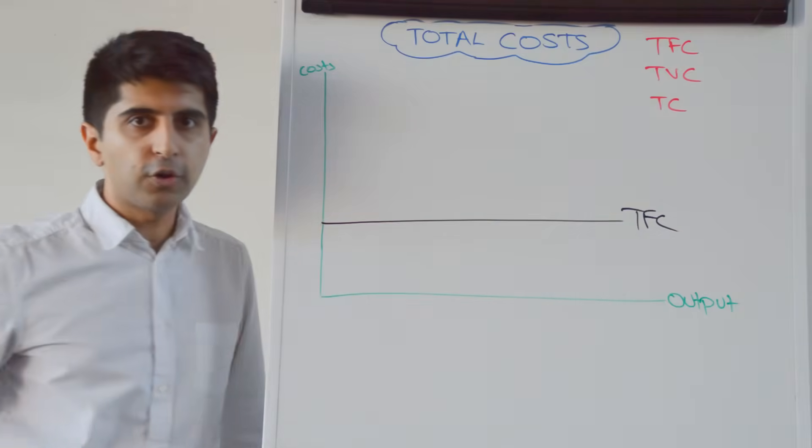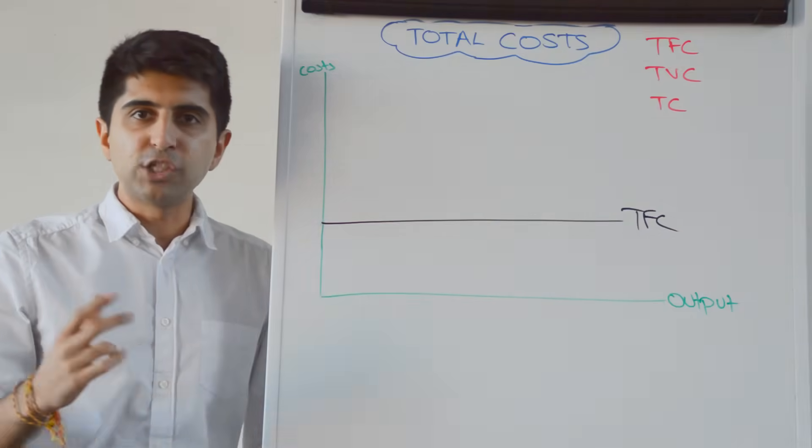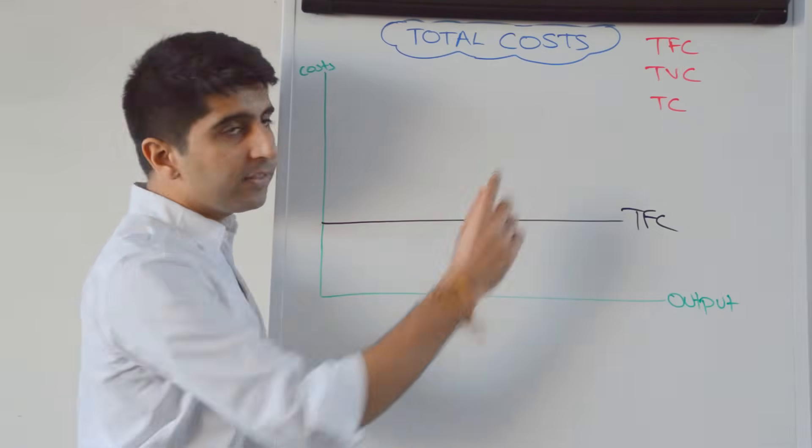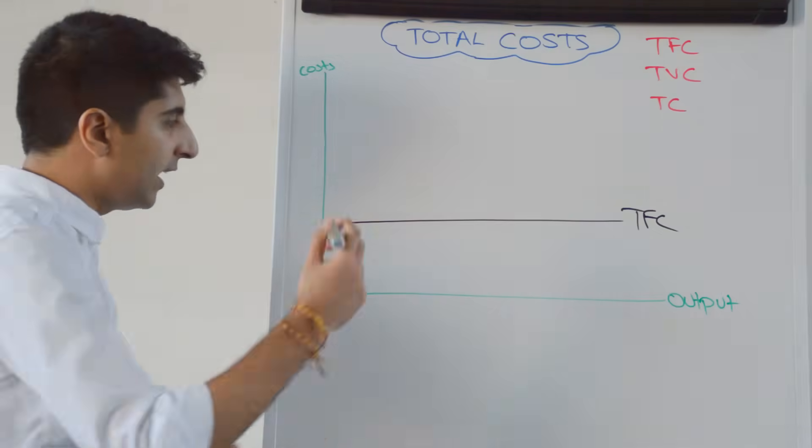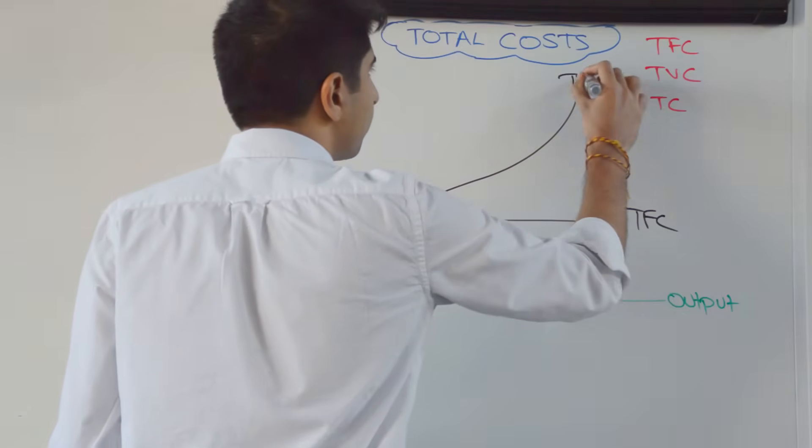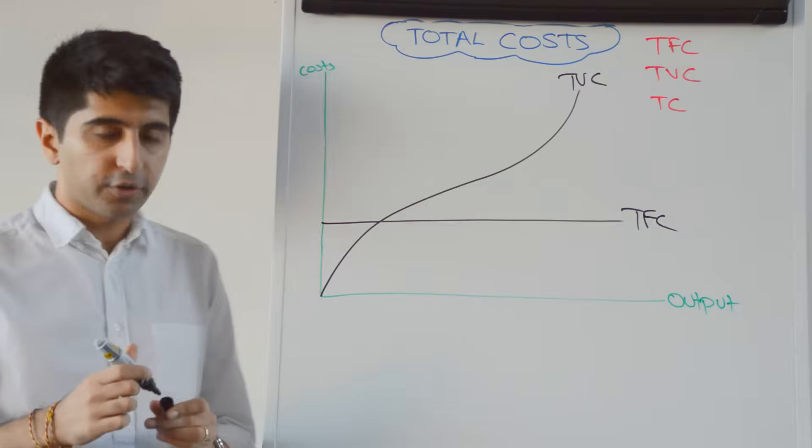The variable cost curve and the total cost curve is influenced heavily in shape by the law of diminishing marginal returns. Let's take the total variable cost curve first. It looks something like that. That is the total variable cost curve.